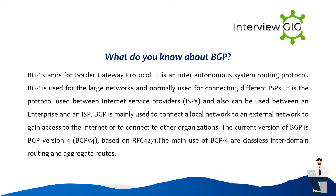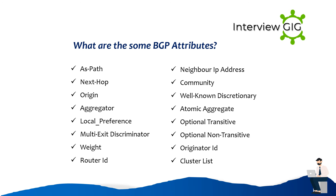What are the BGP attributes? AS Path, Next Hop, Origin, Aggregator, Local Preference, Multi Exit Discriminator, Weight, Router ID, Neighbor IP Address, Community, Well Known Discretionary, Atomic Aggregate, Optional Transitive, Optional Non-Transitive, Originator ID, Cluster List.